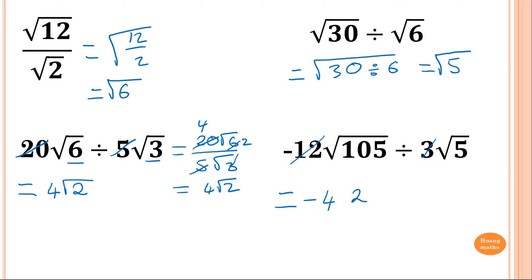So square root of 21. And there's no square number in 21, because 21 is 7 times 3 only. So none of them are square numbers. So that's the best you can do.